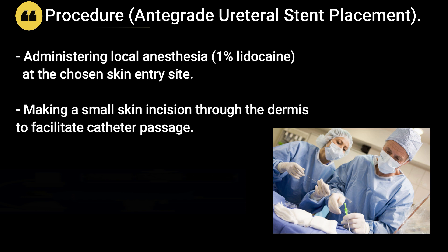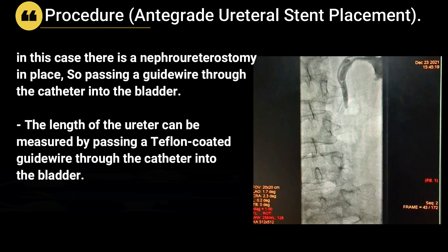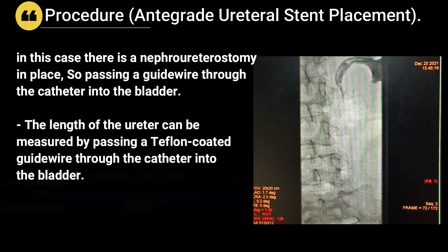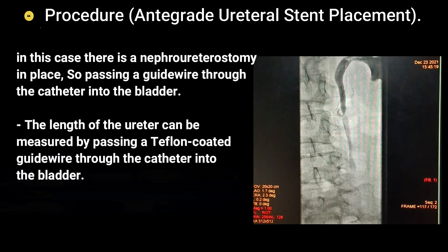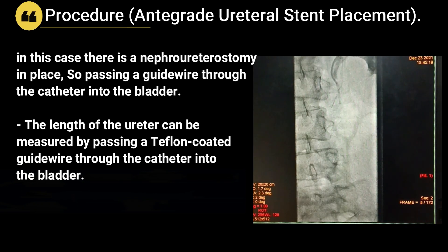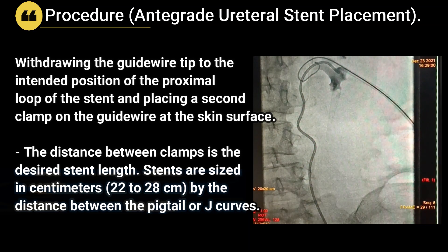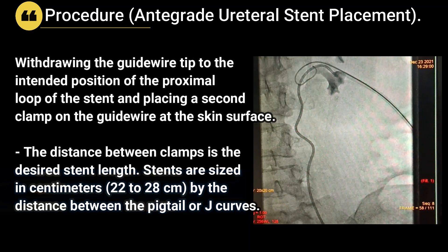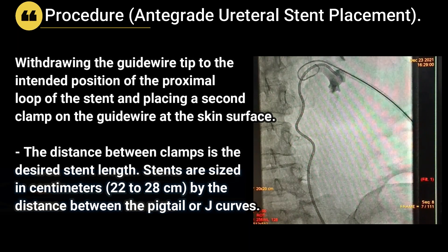A small skin incision is made through the dermis to facilitate catheter passage. In this case there is a nephrostomy already in place, so a guide wire is passed through the catheter into the bladder. The length of the ureter can be measured by passing a Teflon-coated guide wire through the catheter into the bladder, then withdrawing the guide wire tip to the intended position of the proximal loop of the stent, and placing a second clamp on the guide wire at the skin surface.